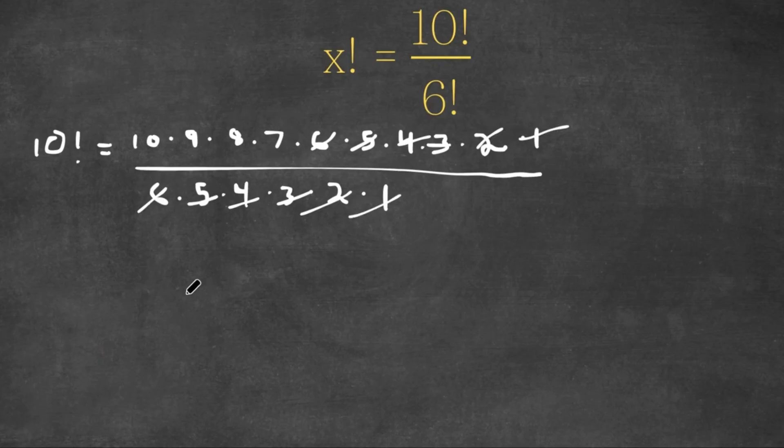So now all we're left with is simply 10 times 9 times 8 times 7, and this is equal to x factorial.